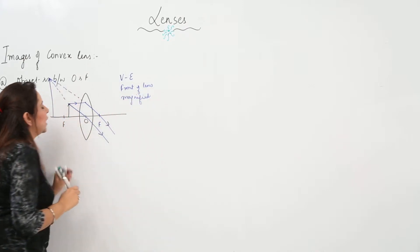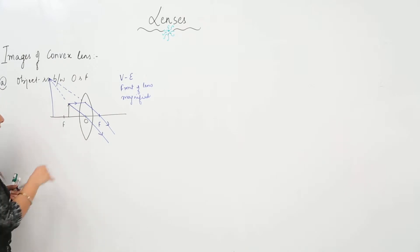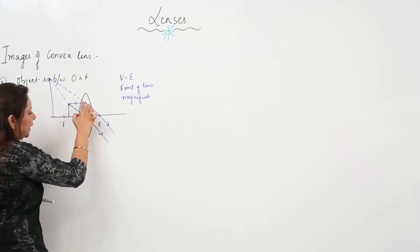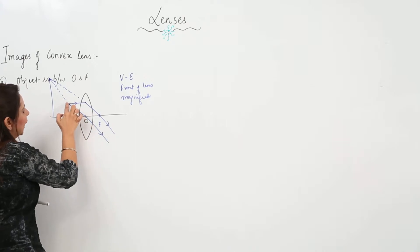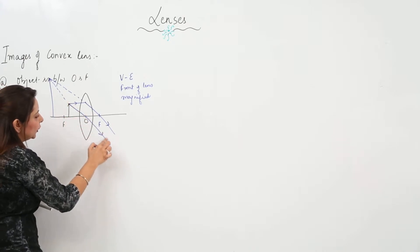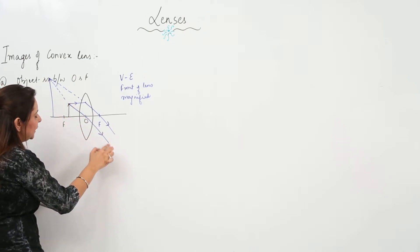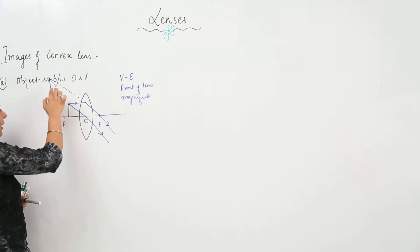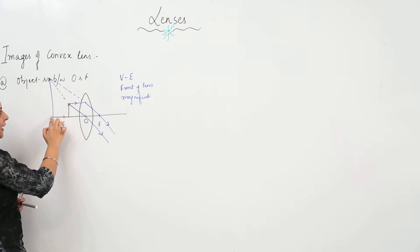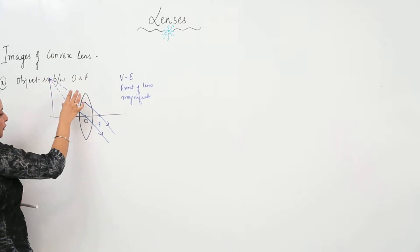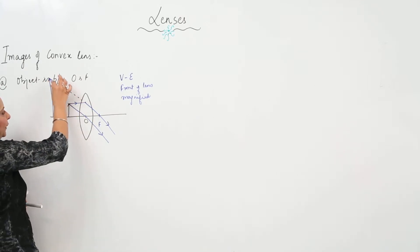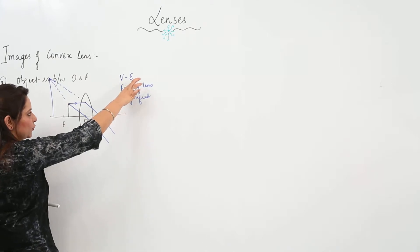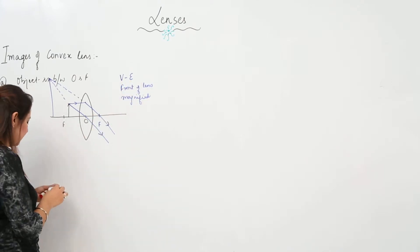This is how you draw the figure. The parallel ray after refraction passes through focus, and the ray from the optical center goes straight. When you try to meet them, they meet behind the lens — it is magnified because it is an imaginary meeting, so it is virtual, and we know a virtual image is always erect.